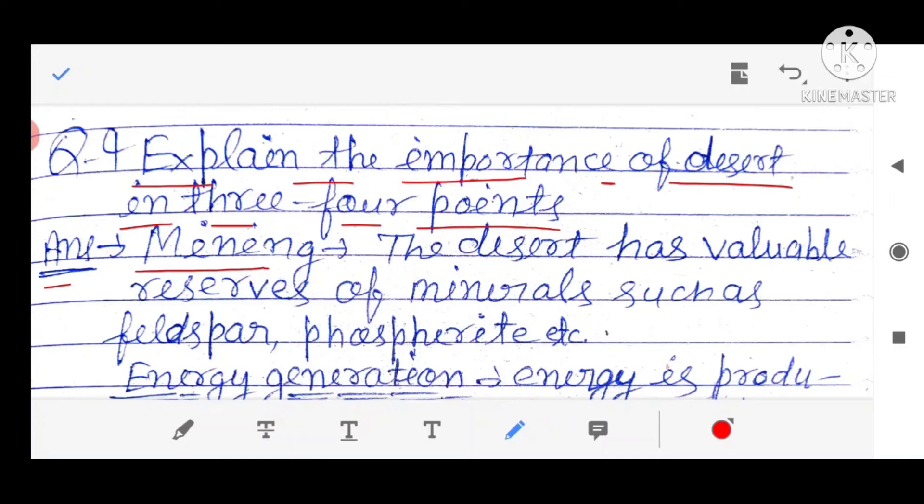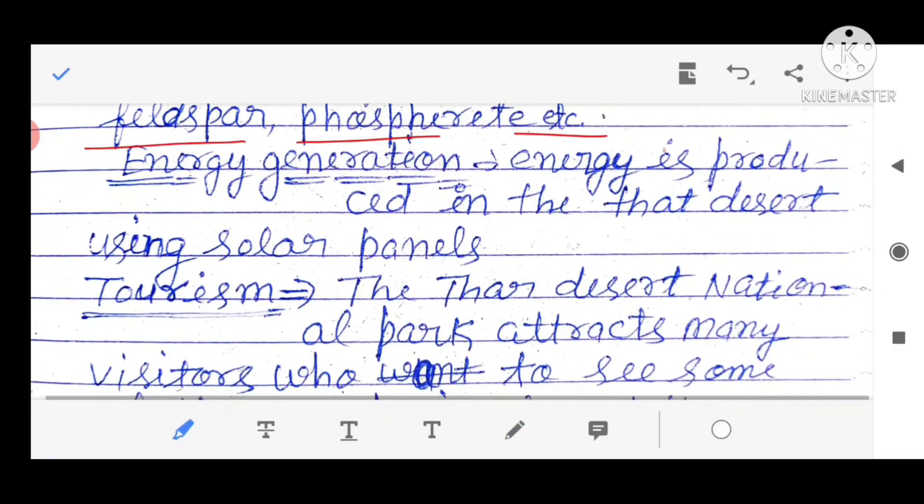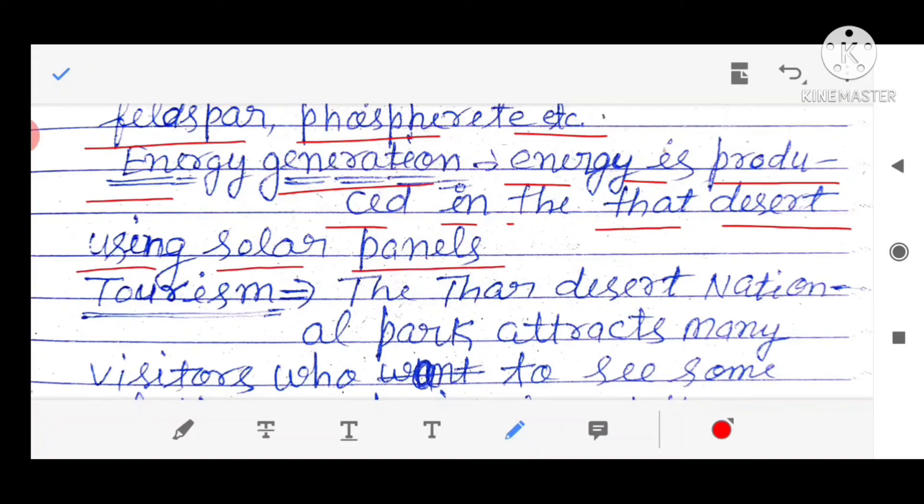The desert has valuable reserves of minerals such as feldspar, phosphorite, etc. Energy generation. Energy is produced in the Thar desert using solar panels.